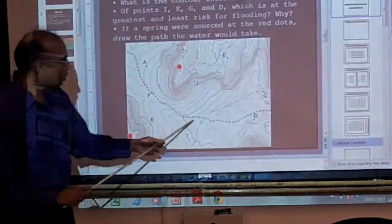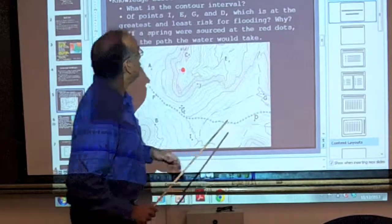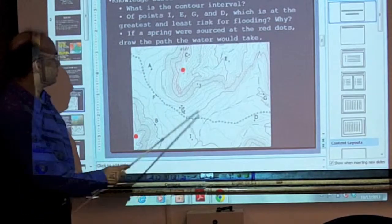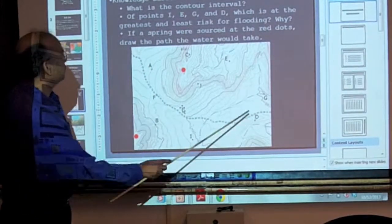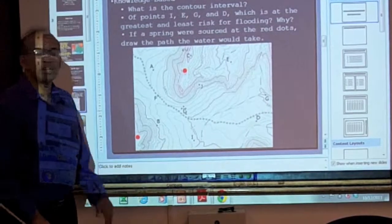We can see that there's a road and we can see that there's some streams in here. So one of the things that one might ask is, of these points, I, G, D, which is the greatest risk of flooding.